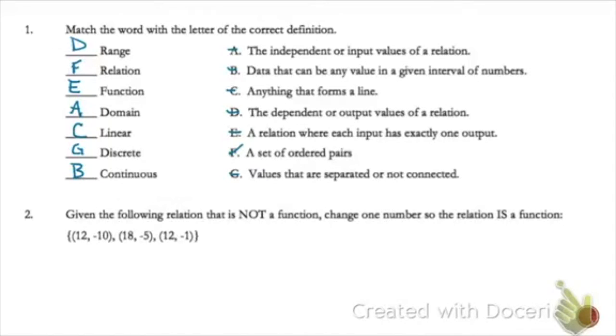Alright, number 2. It says given that the following relation is not a function, change one number so that it is a function. Remember that a function is that for each input there is exactly one output. So I've got this input repeated and then it has two outputs, not one output. So I could simply change this to a different input and that will make it a function.